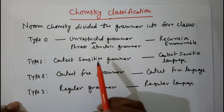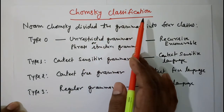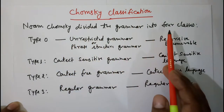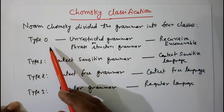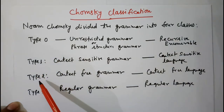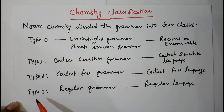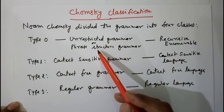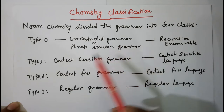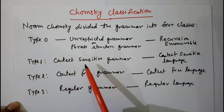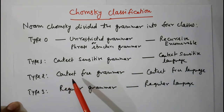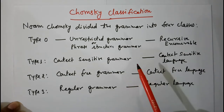In this lecture, we are going to discuss Chomsky's classification of grammars. Noam Chomsky classified grammar into four classes: Type 0, Type 1, Type 2, and Type 3. Type 0 grammar is also called unrestricted grammar or phrase-structured grammar. Type 1 grammar is also called context-sensitive grammar. Type 2 grammar is context-free grammar, and Type 3 grammar is regular grammar.